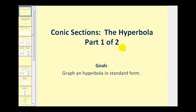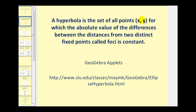Welcome to the first of two parts on the conic section, the hyperbola. The goal of this video is to graph a hyperbola in standard form. A hyperbola is the set of all points x, y for which the absolute value of the differences between the distances from two distinct fixed points called foci is constant.